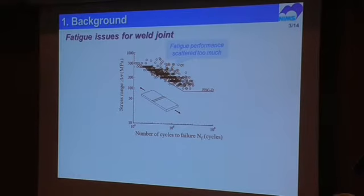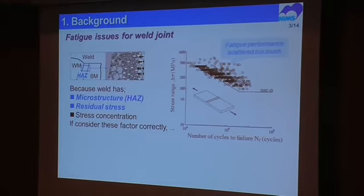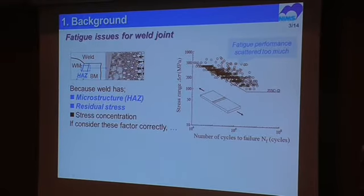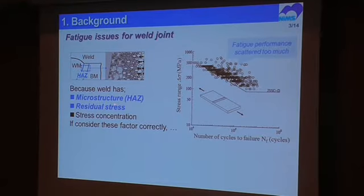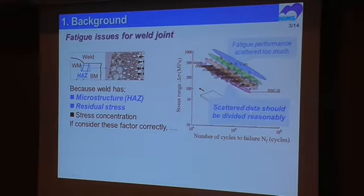First, I'd like to show the fatigue issues for weld joints. As you know, fatigue data for weld joints is very scattered as shown here. This is because weld joints have a lot of complex effective factors such as variable microstructure, heat-affected zone, residual stress, stress concentration, and so on. But if we can consider these factors correctly, such a set of data should be divided in a reasonable manner like this. This is very useful in engineering specifications.